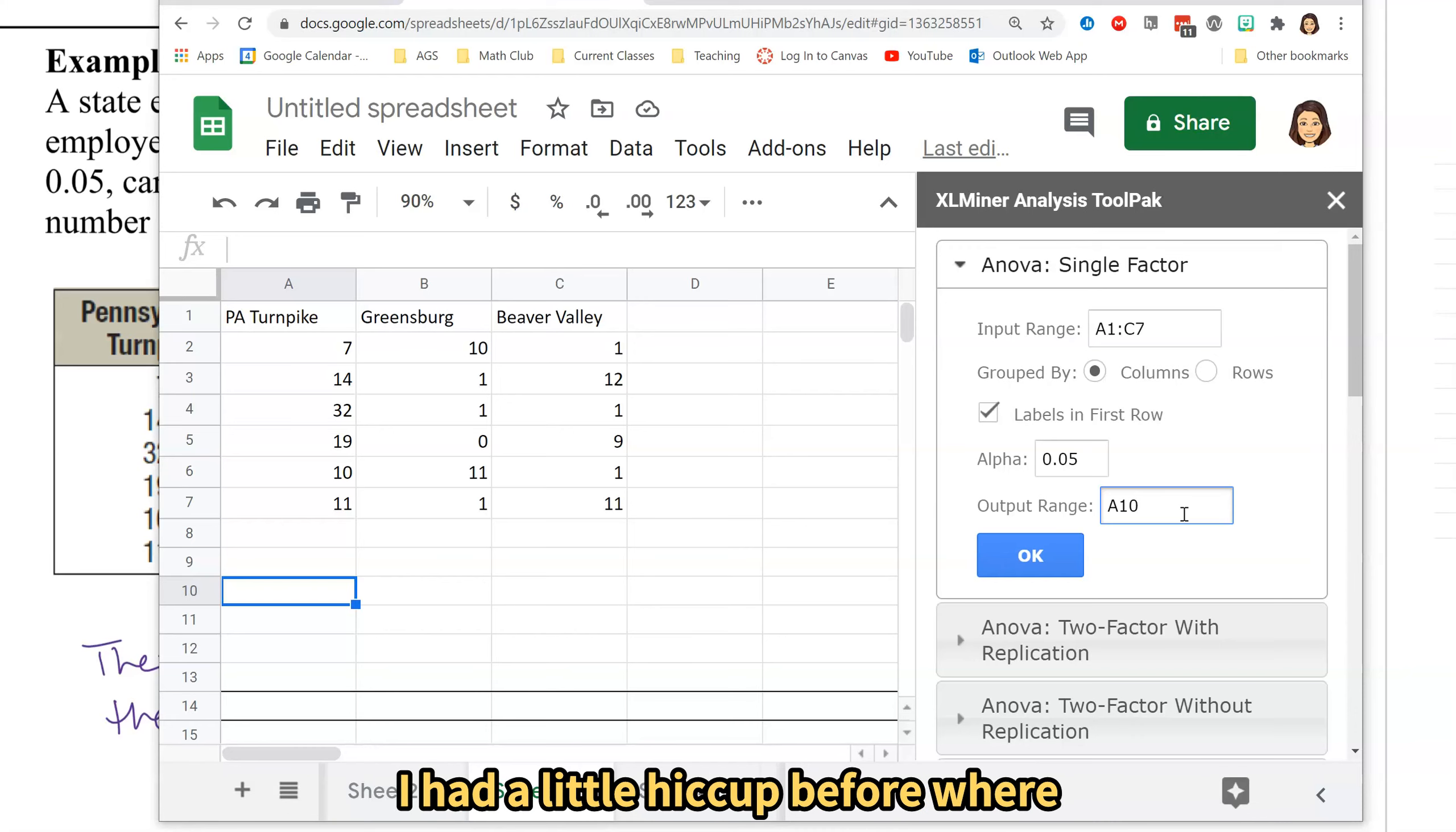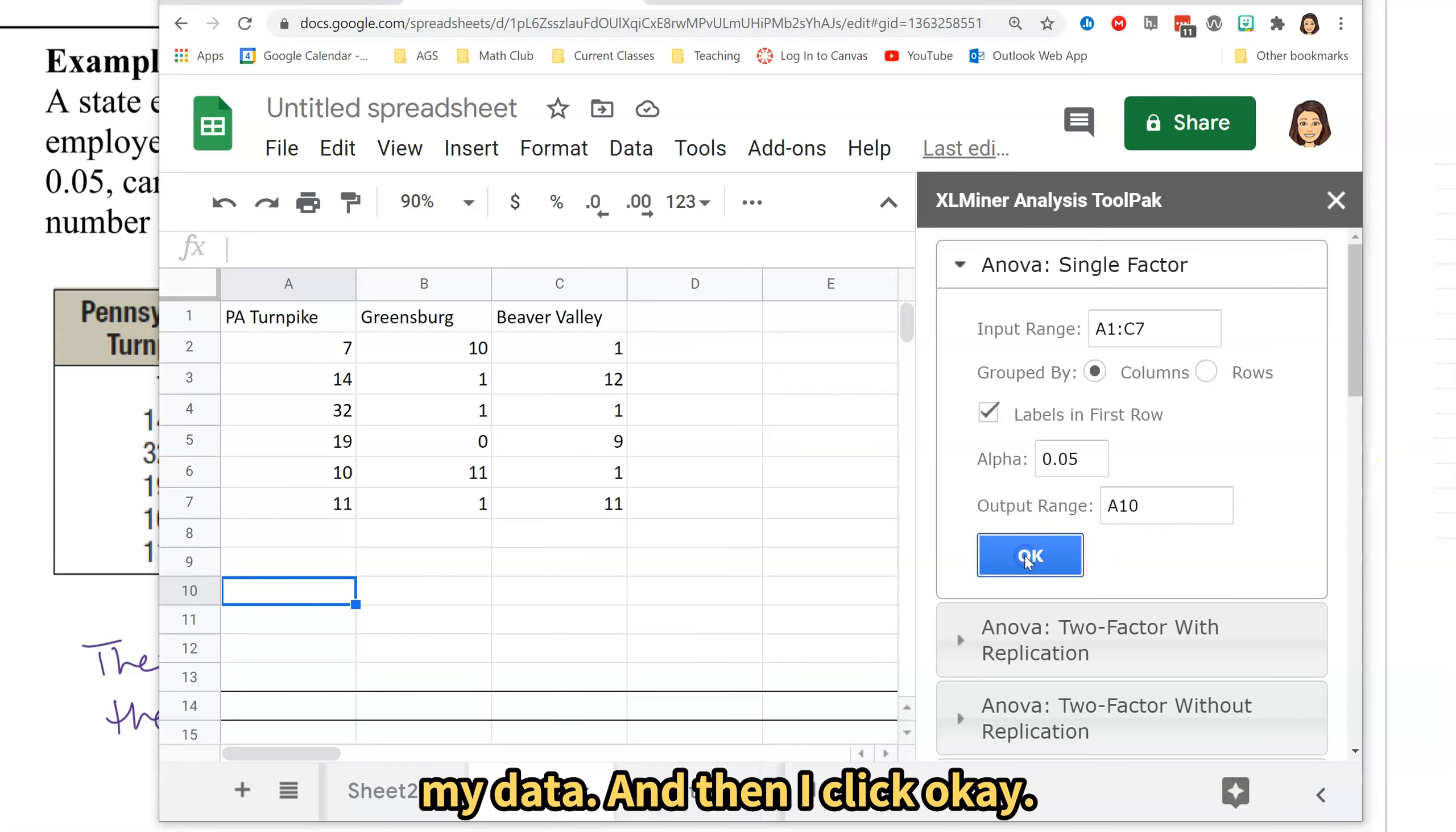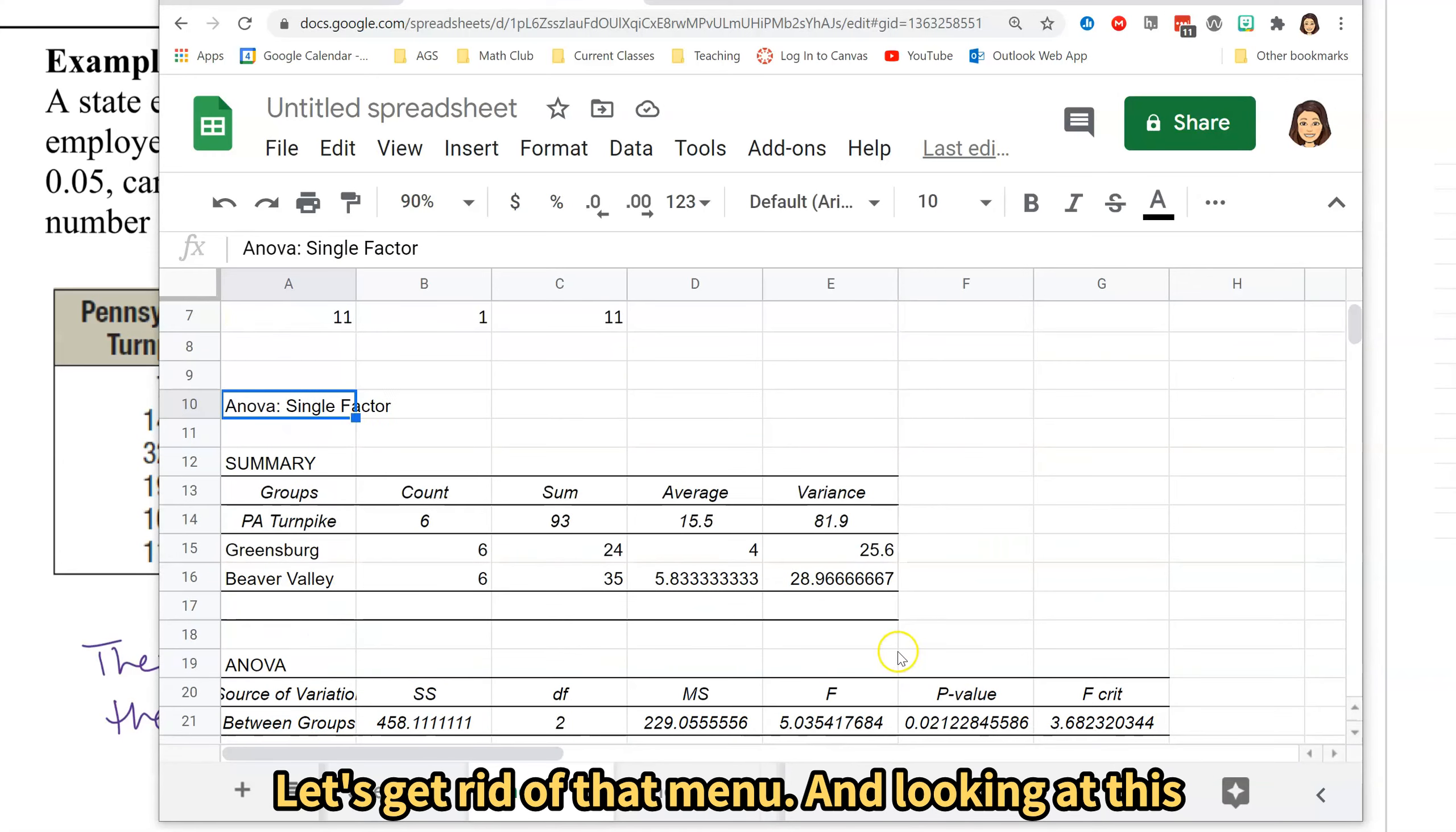I had a little hiccup before where when I put it to the right of the data like I do in Excel, for some reason Google shoved it over farther to the left than where I wanted it. So I am going to guarantee that it is not going to overwrite my data. And then I click OK. Let's get rid of that menu.